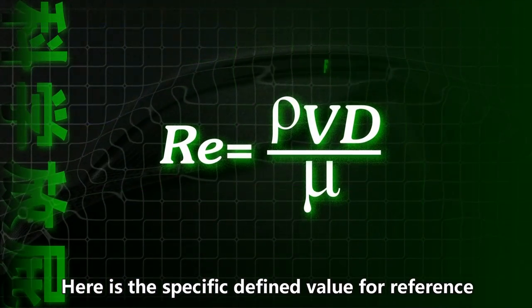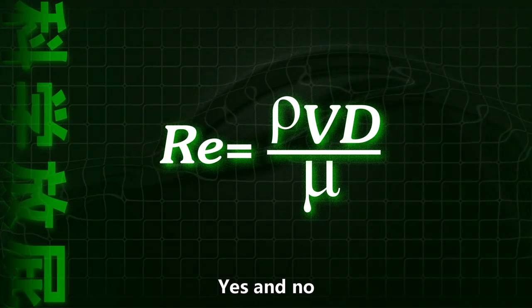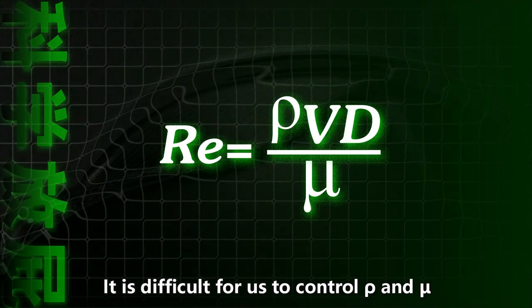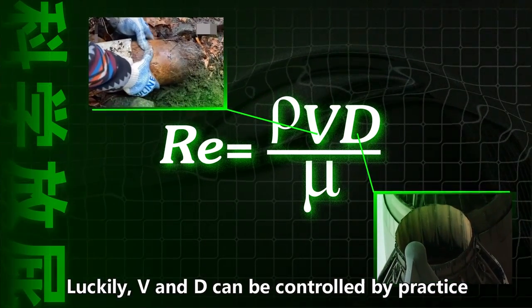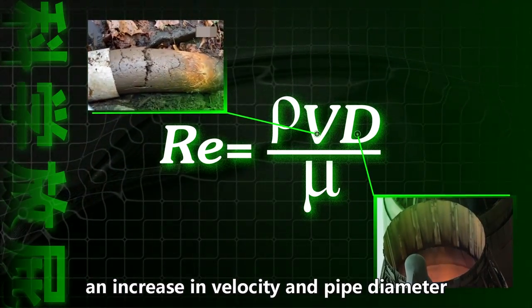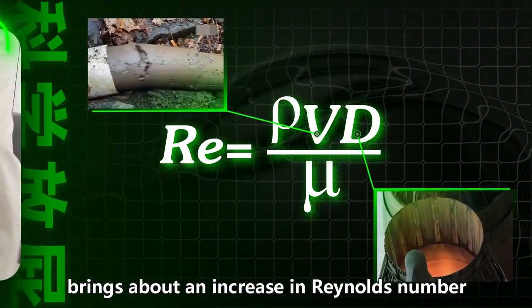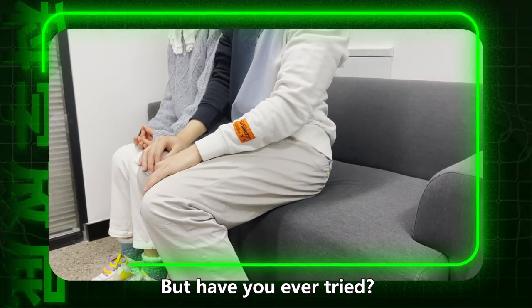Here is a specific defined value for reference. With this formula, can we fart scientifically? Yes and no. It's difficult for us to change ρ and μ because they are related to daily diet and rest. Luckily, V and D can be controlled by practice. As you can see from the formula, an increase in velocity and pipe diameter brings about an increase in Reynolds number, which further causes turbulent flow.